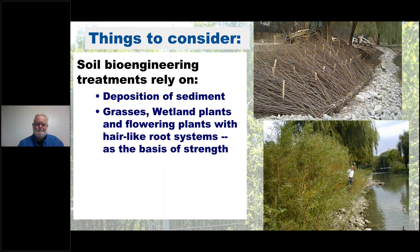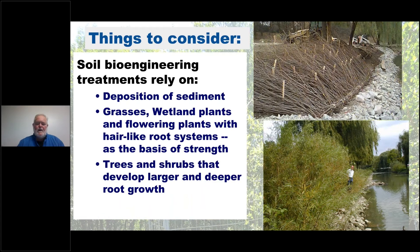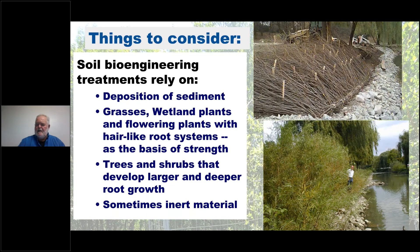We plant trees and shrubs that develop larger and deeper root growth. Sometimes we need to add inert material — like rock at the base — even though often only the fascine remains. Even with just that support, the growth was pretty good and it was able to protect the bank.